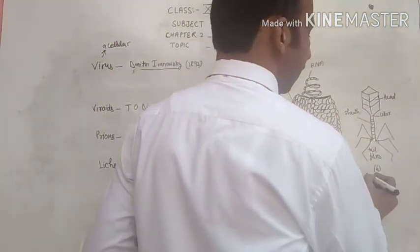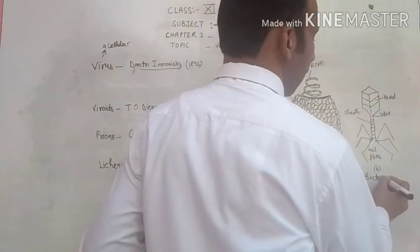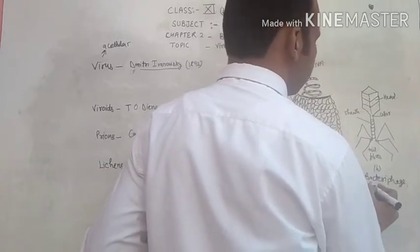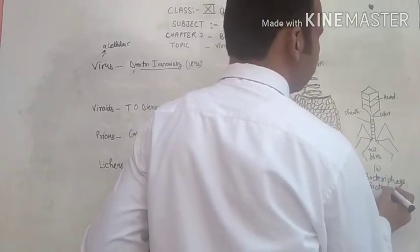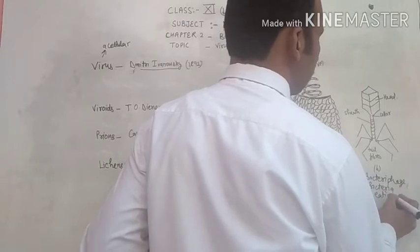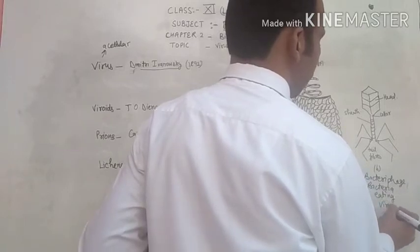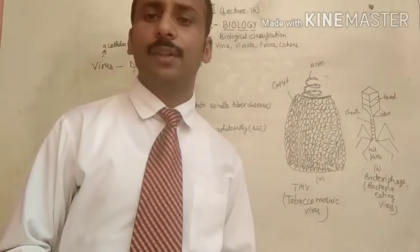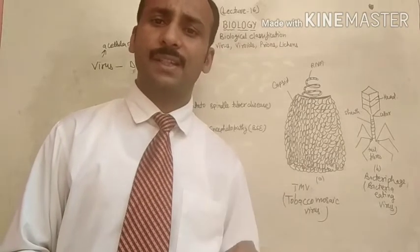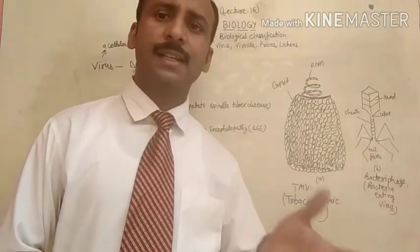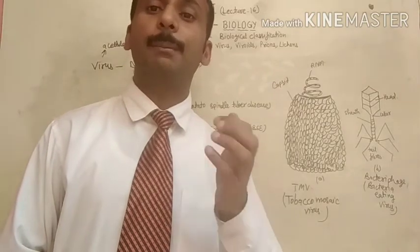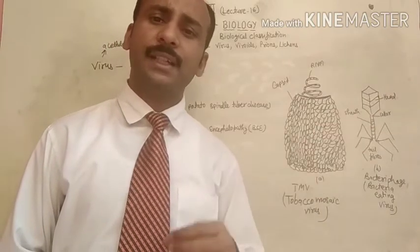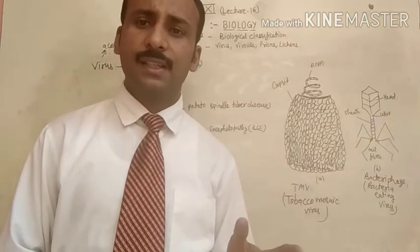This is called Bacteriophage — in short, this is called Bacteria Eating Virus. Bacteriophages are called Bacteria Eating Viruses because they act on bacteria. These viruses are very small as compared to bacteria, but because they act on bacteria, they are called Bacteria Eating Virus or Bacteriophage.